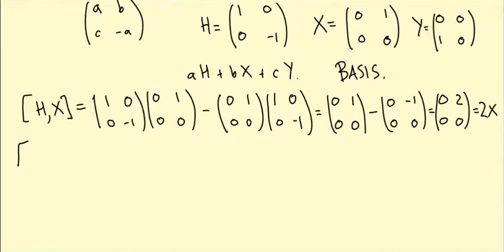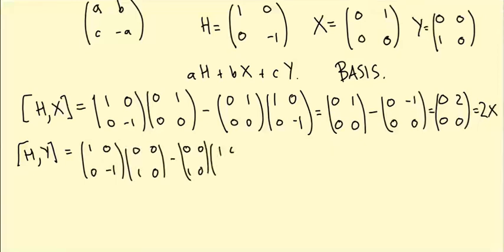Let's do another one. What's H bracket Y? Similar computation. (1, 0, 0, -1) times (0, 0, 1, 0) minus (0, 0, 1, 0) times (1, 0, 0, -1). Incidentally, if you're watching this, you should just stop and do it yourself because it's multiplying matrices. You can definitely do this. You end up getting (0, 0, -2, 0). Let's just check that minus two. This would be 0 times 0 minus 1 times 1 minus 1 times 1. So that's why we get a minus two here. So that's minus 2Y.